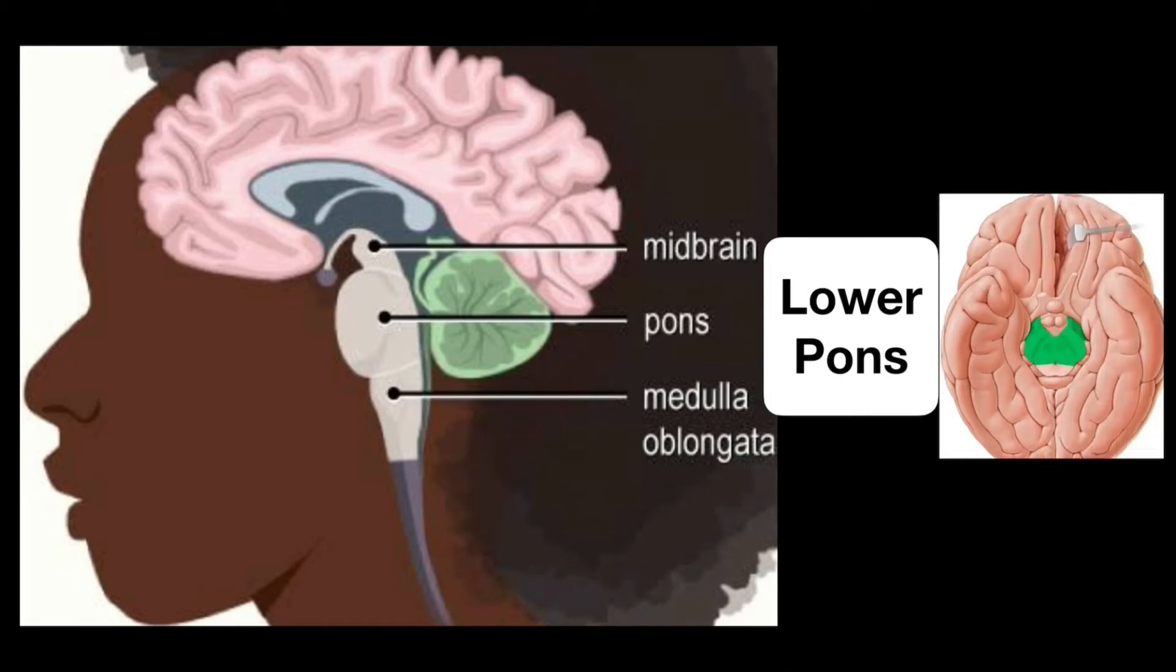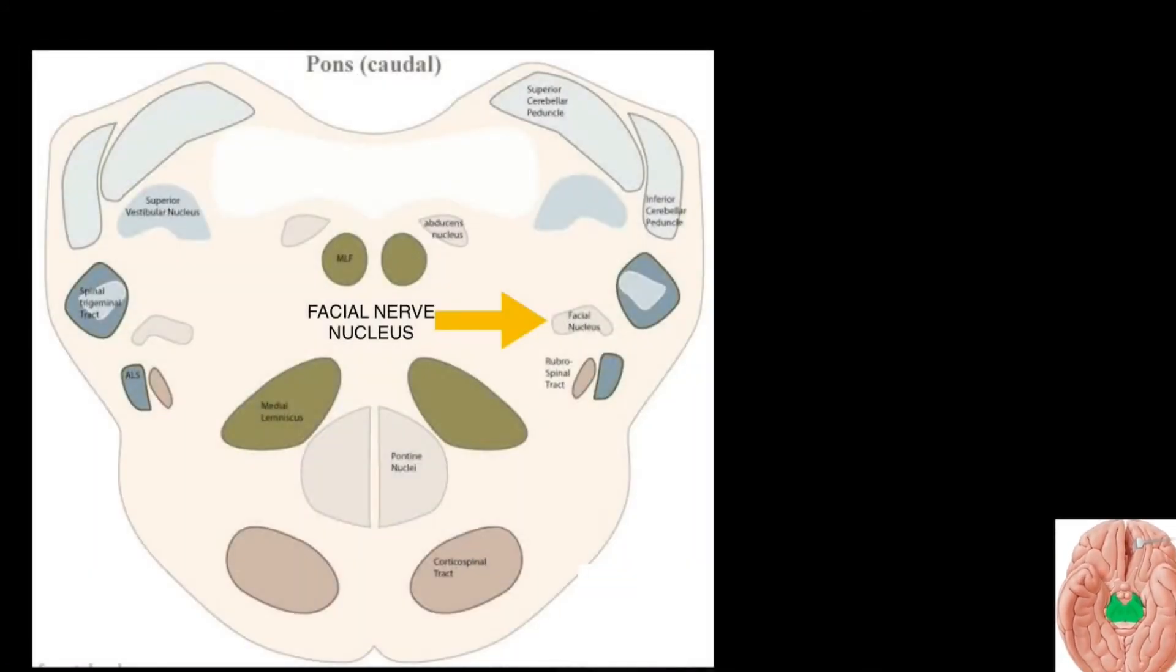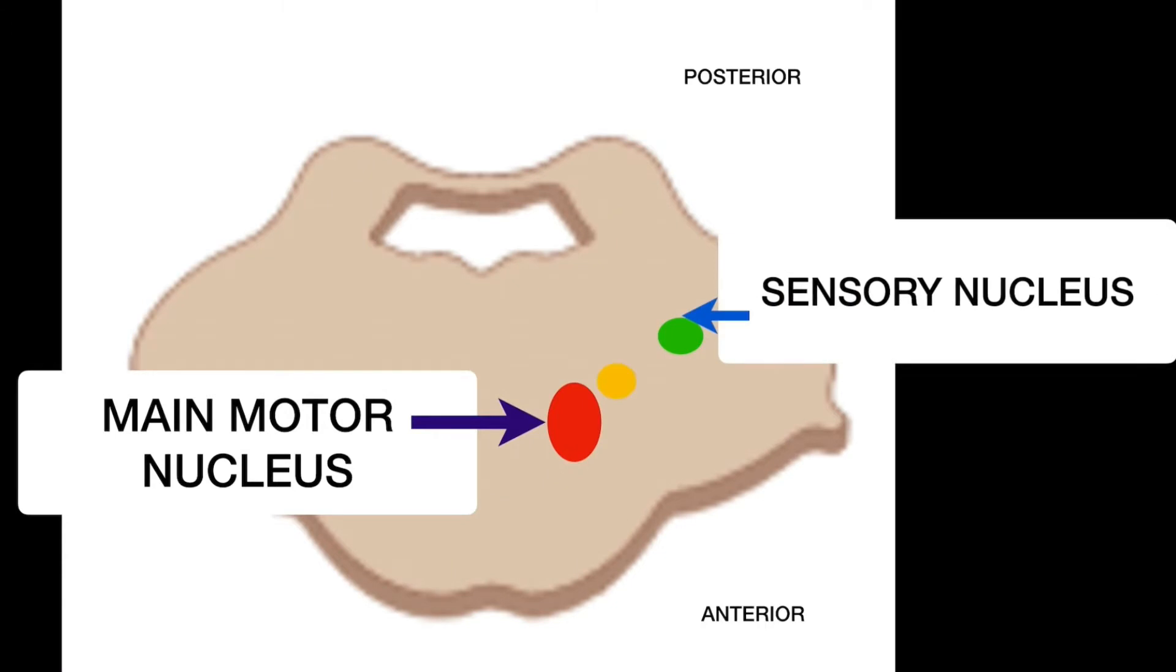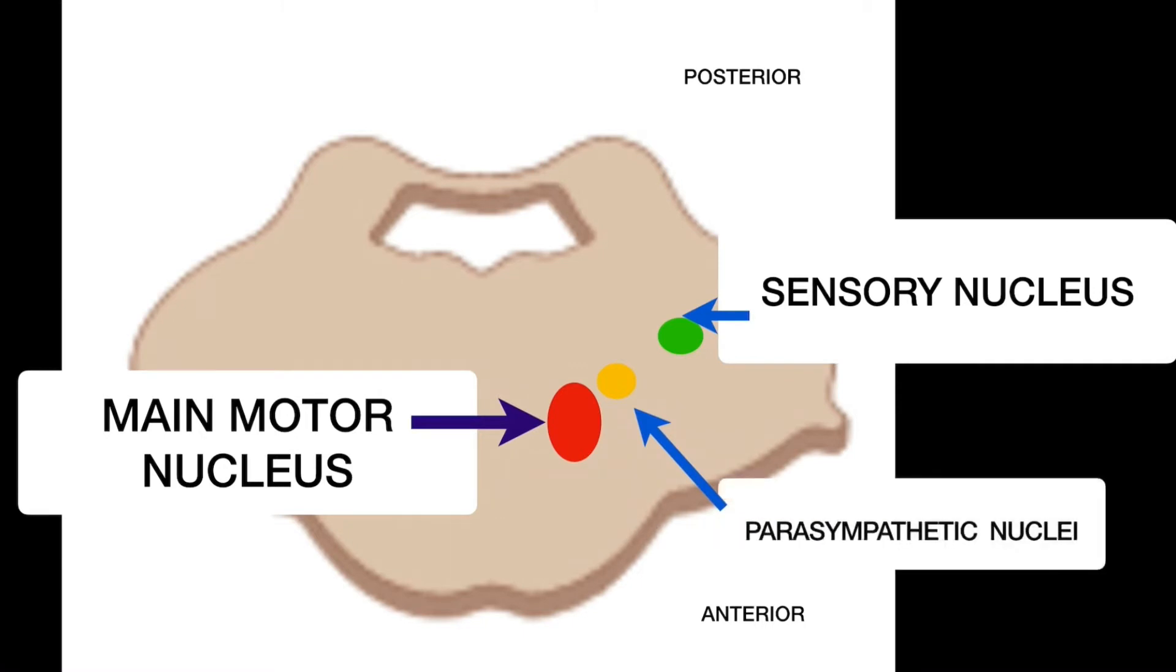Let us see cross section at lower pons. As you can see, the sixth cranial nerve nuclei also lie at the same level. Here we have cross section of lower pons. The facial nerve has three nuclei, the main motor nucleus, the sensory nucleus and the parasympathetic nuclei which includes superior salivatory and lacrimal nuclei.